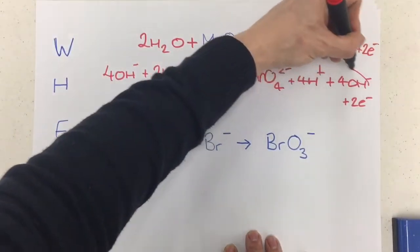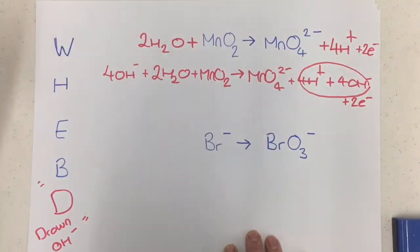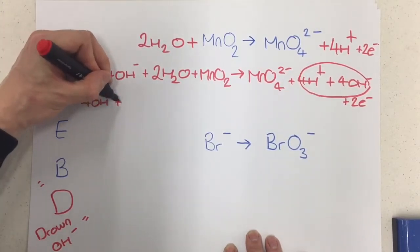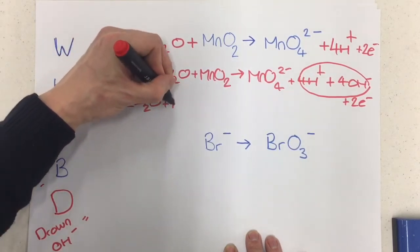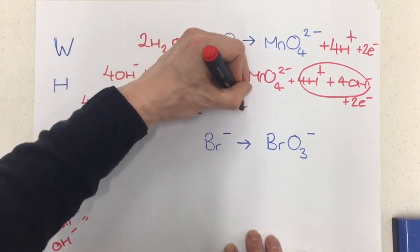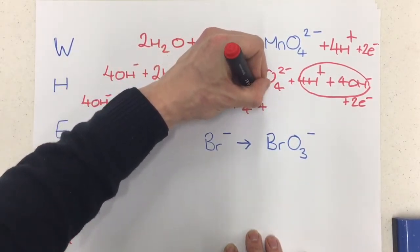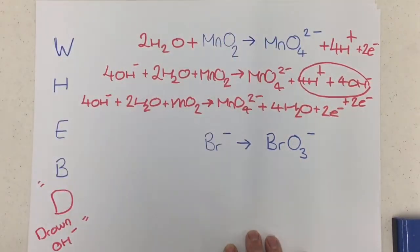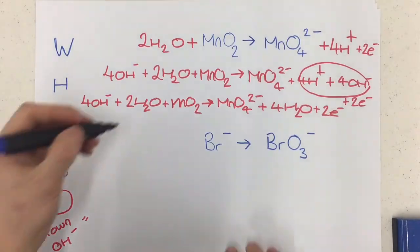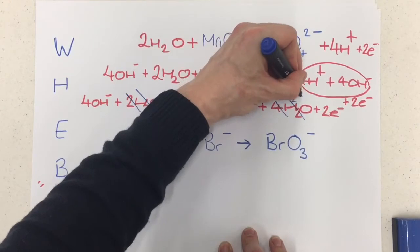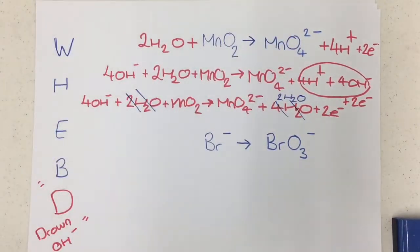So now what I need to do is I combine these to make waters. So my equation now is 4OH- plus 2H2O plus MnO2 reacts to form MnO4^2- 4H2O and 2e-. So now you cancel down any H2Os you have. So both of these go, and two of those go, so I'm left with 2H2O on the right.